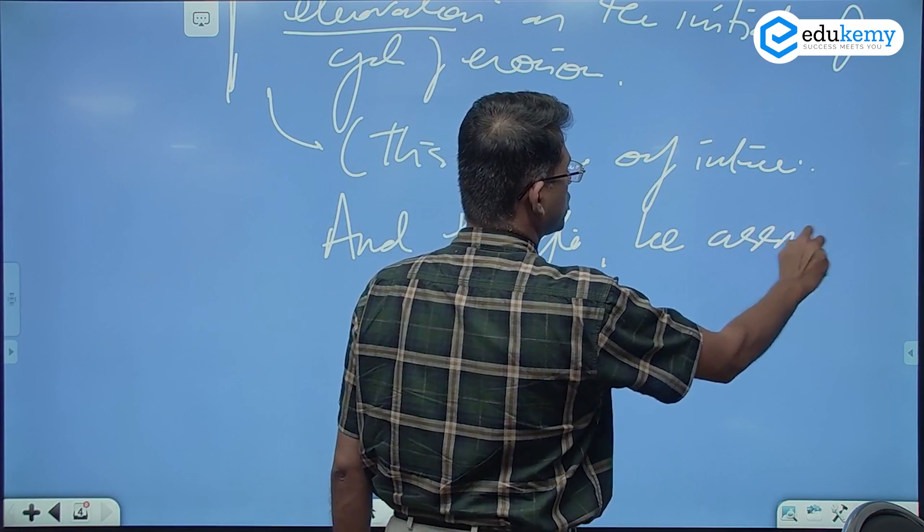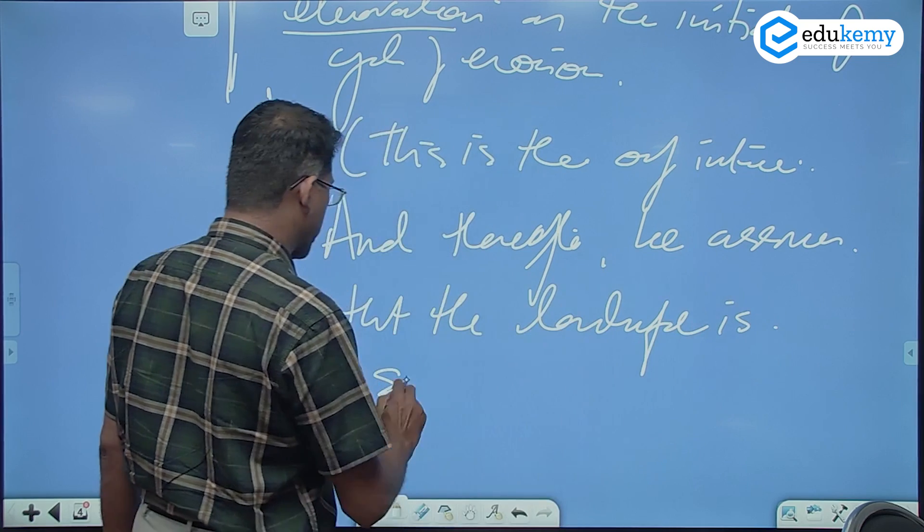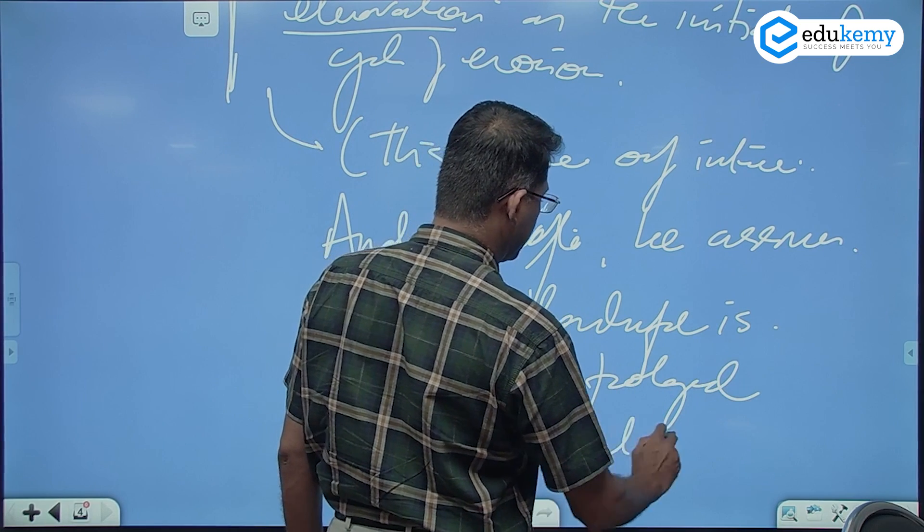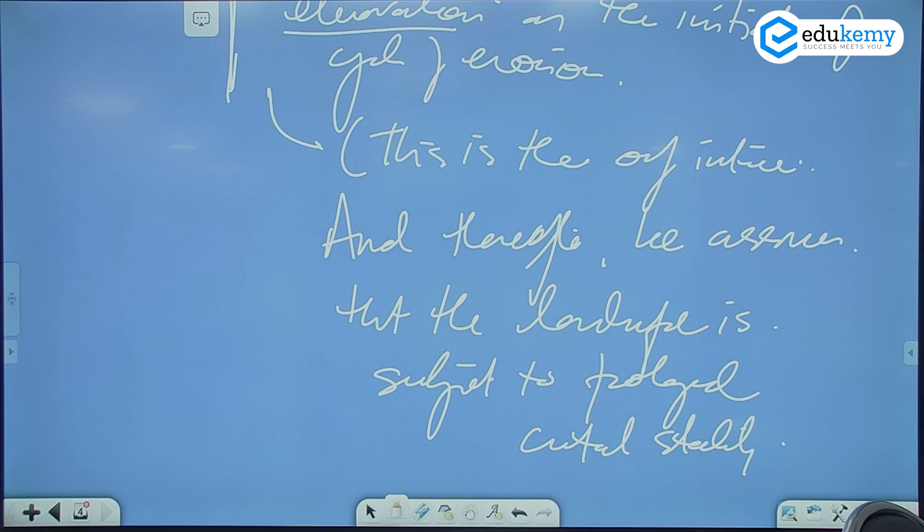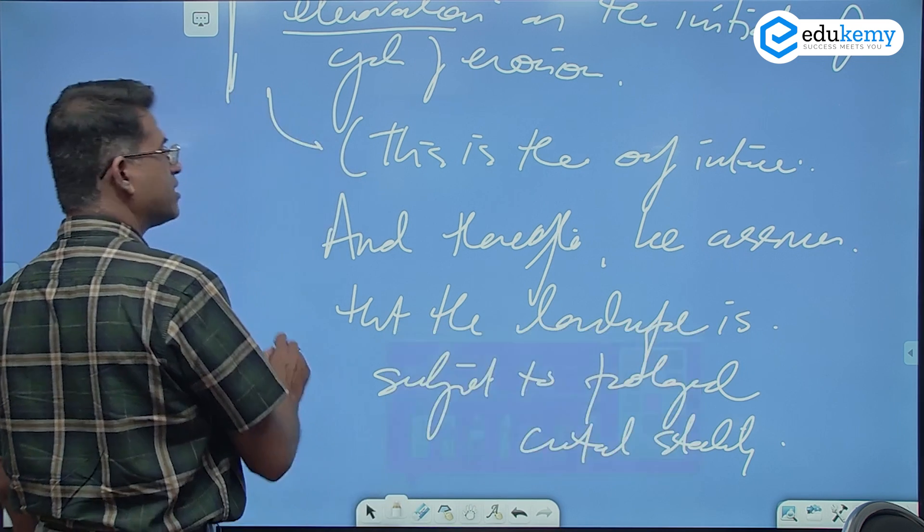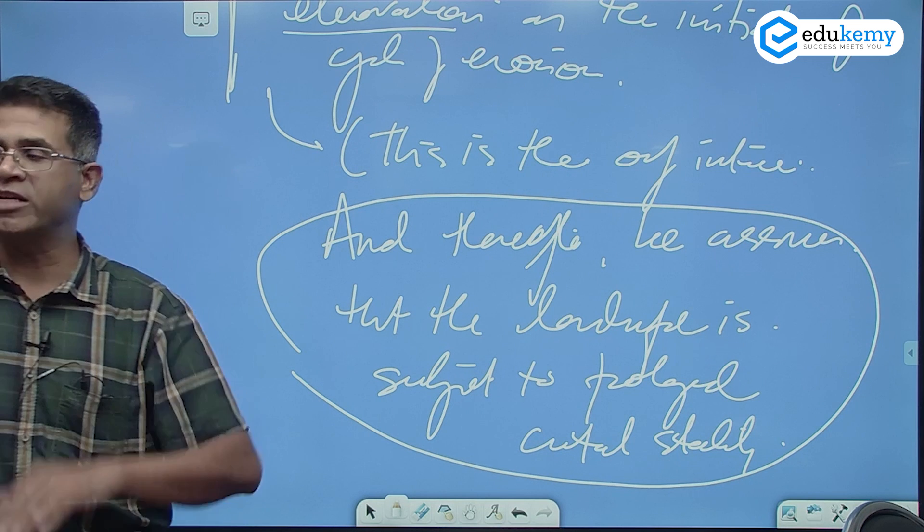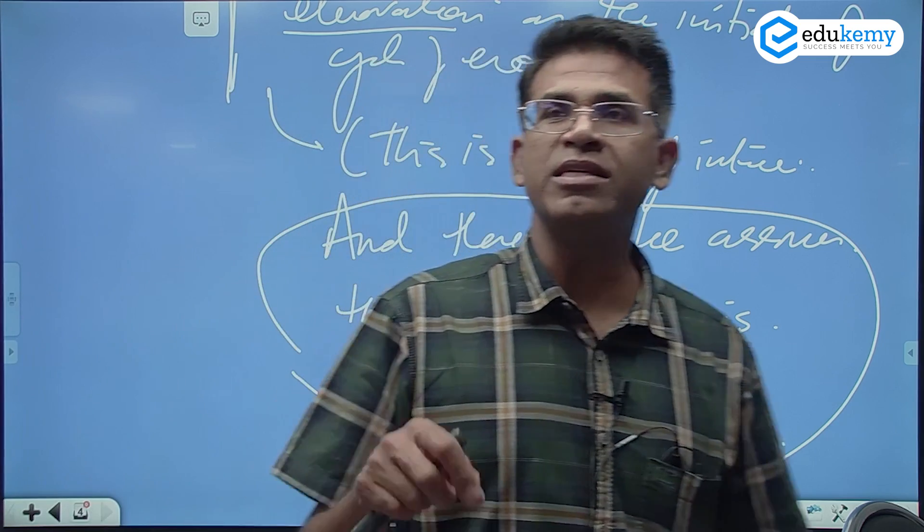He assumes that the landscape is subject to prolonged crustal stability without change in the base level. Once upliftment has happened, he says, after that there is no crustal movement anymore. No upliftment, no subsidence, no volcanism, no rifting, nothing. The landscape is now having a stability. The landform is now not disturbed, and this is for perpetuity. Prolonged crustal stability without changes in the base level.